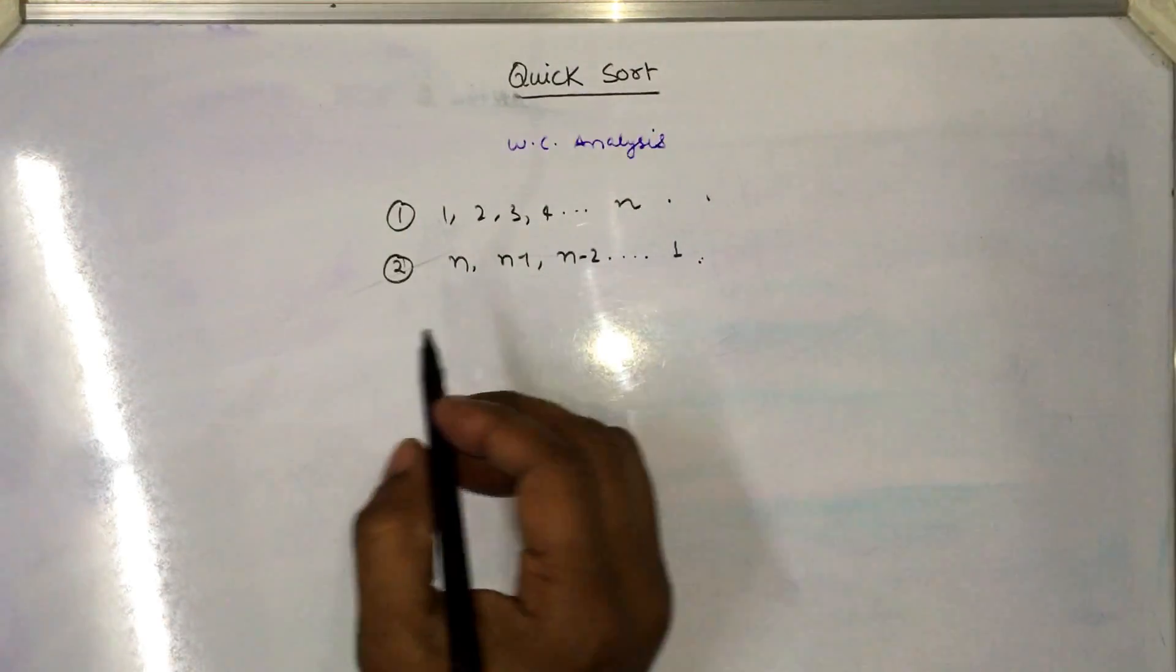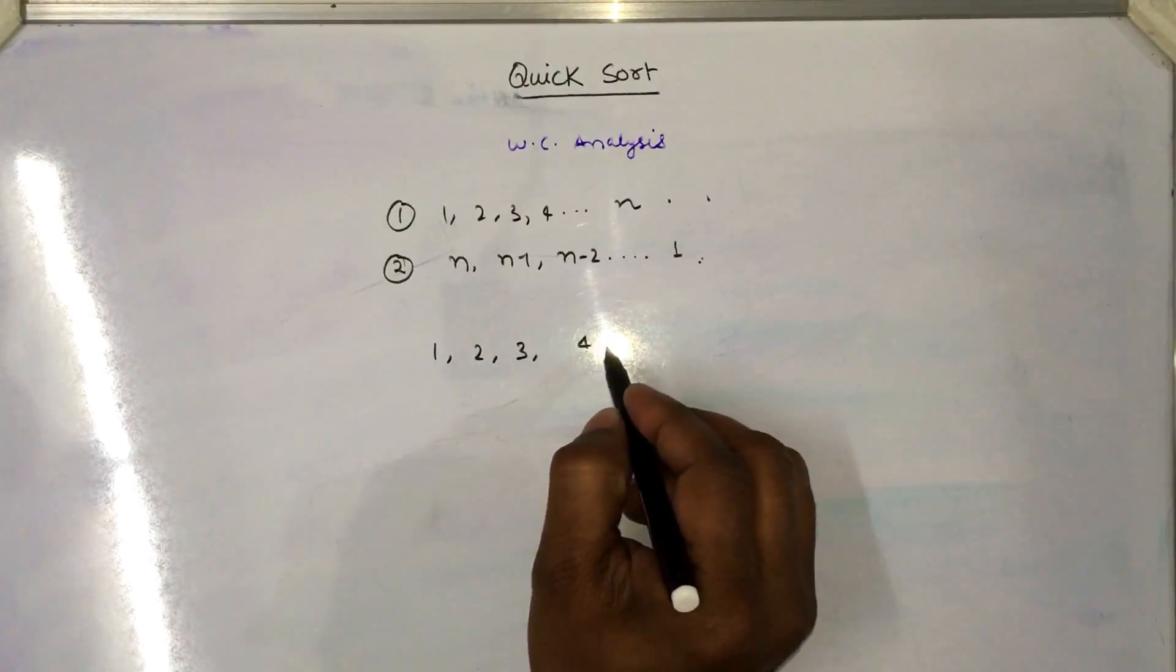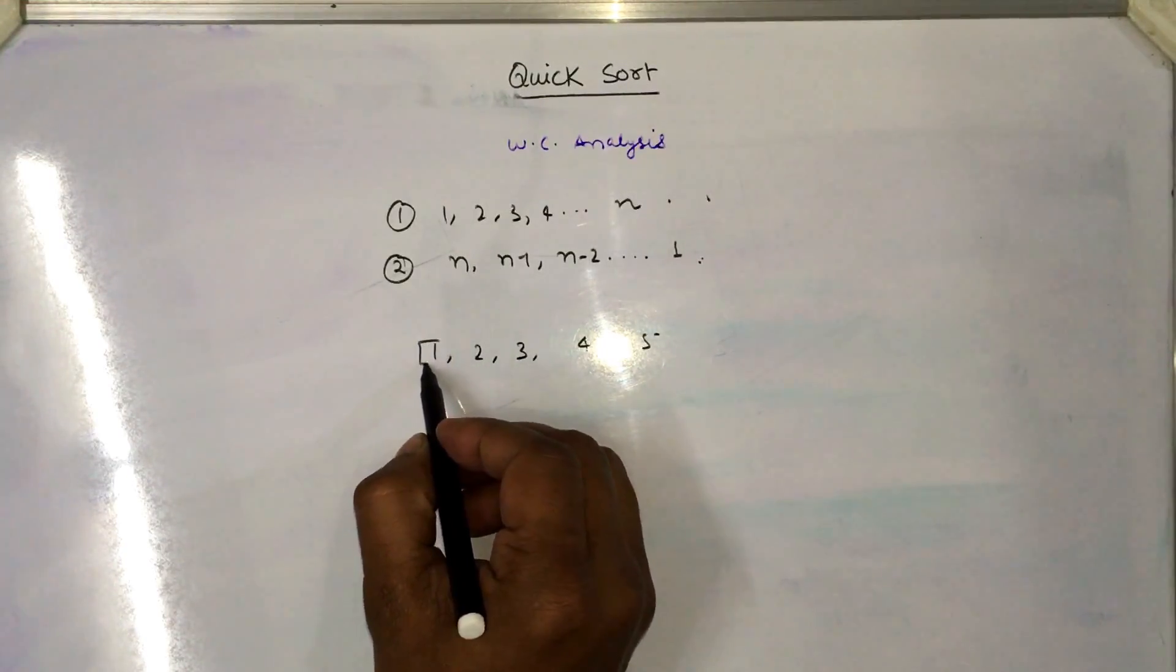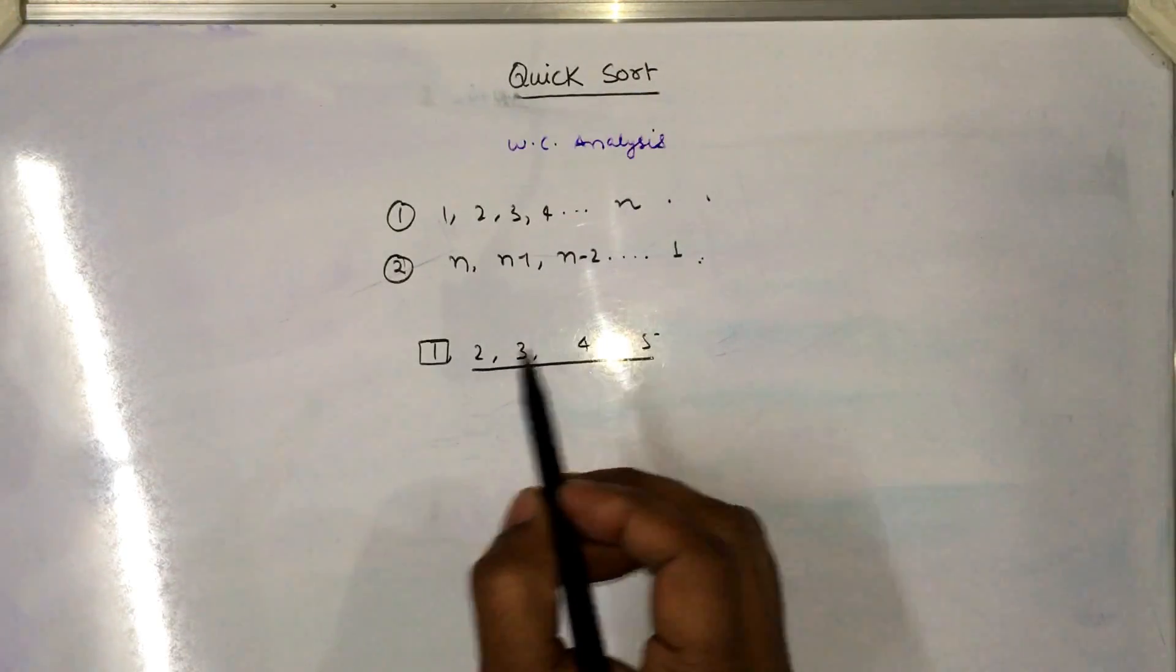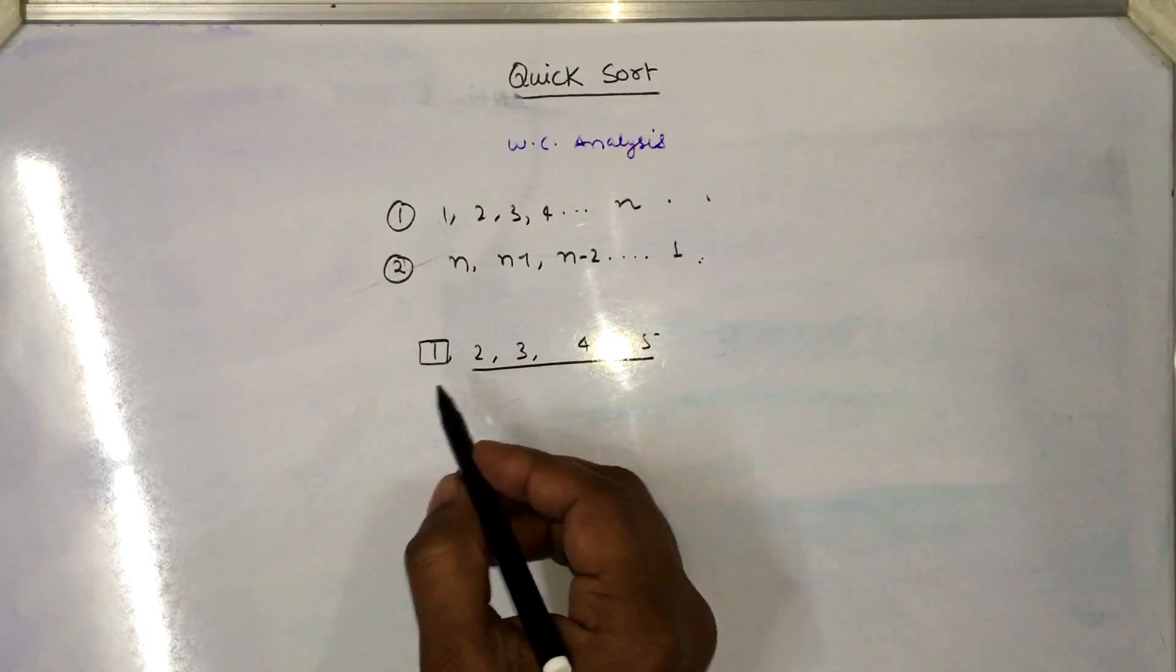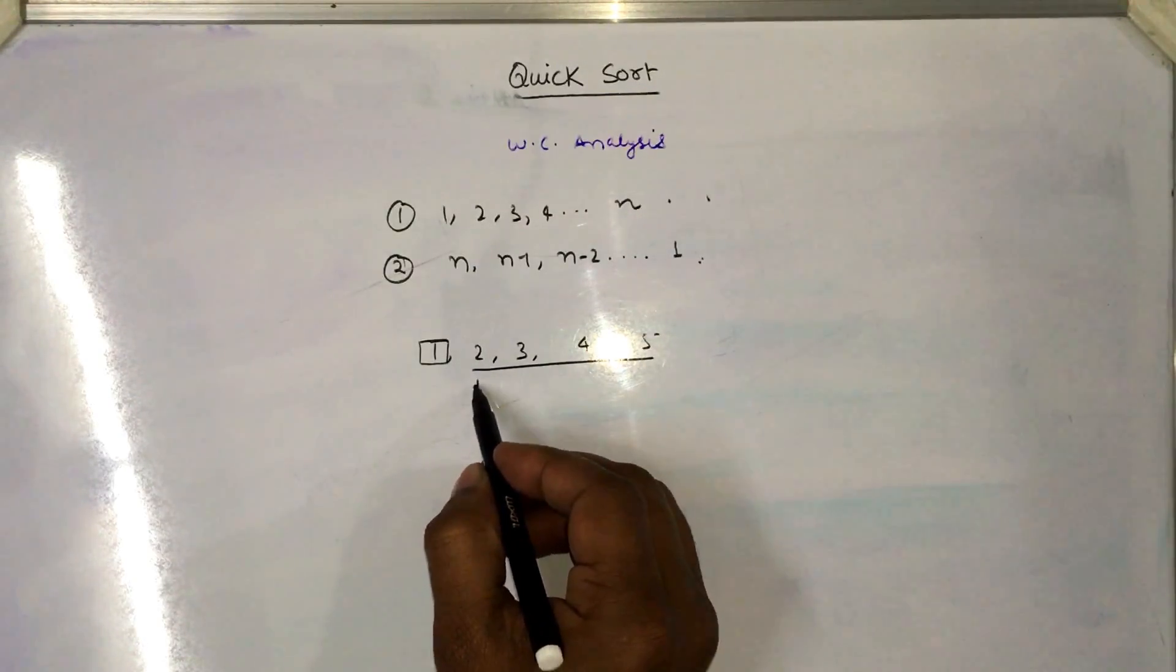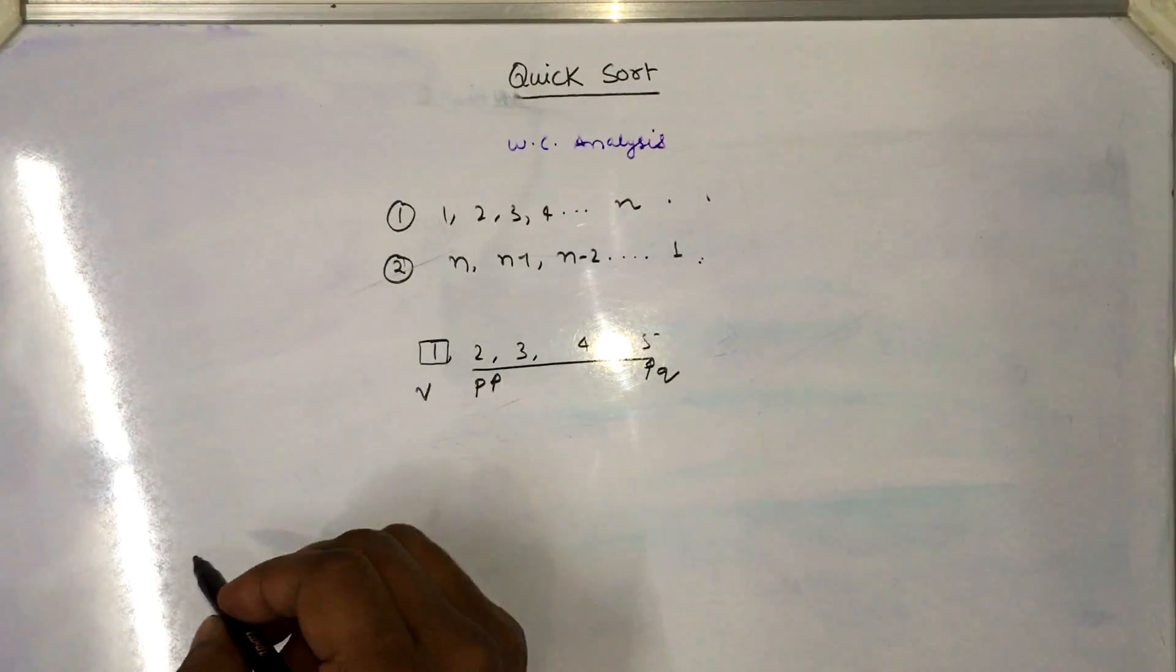For example, if I have elements like 1, 2, 3, 4, 5 and I want to apply the quicksort and I consider this element as the first element, then the rest of the elements have to be scanned and we are going to partition these elements. So this is my p pointer, this is my q pointer, and this is the value of v.